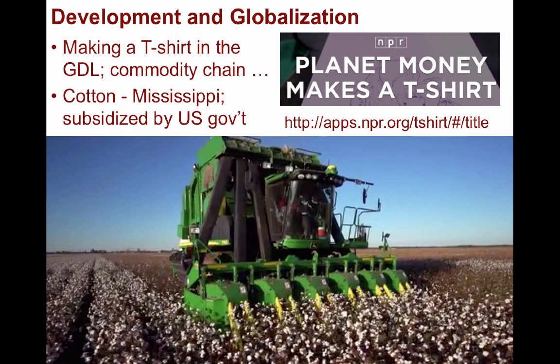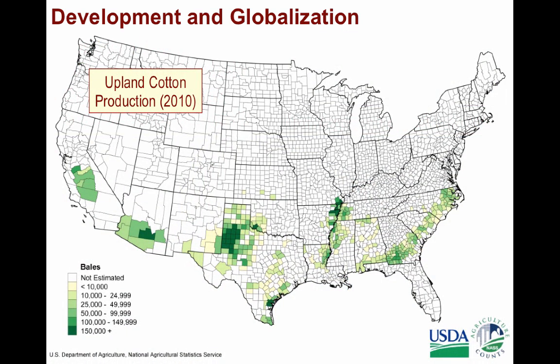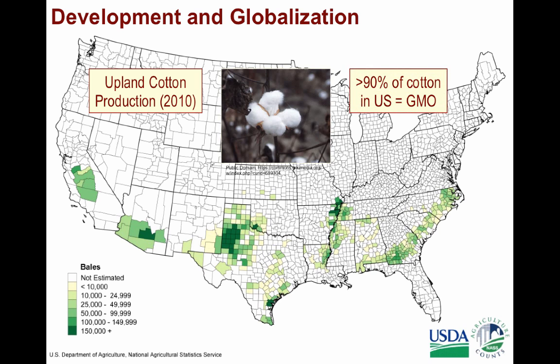This map shows the production of upland cotton in 2010. This is the most common type of cotton in the U.S., which originated in Mexico. That said, more than 90% of the cotton produced in the U.S. are GMOs.